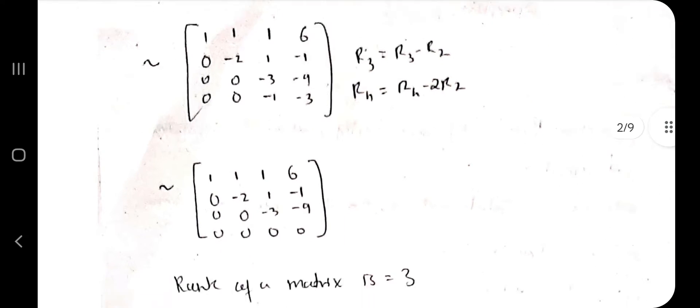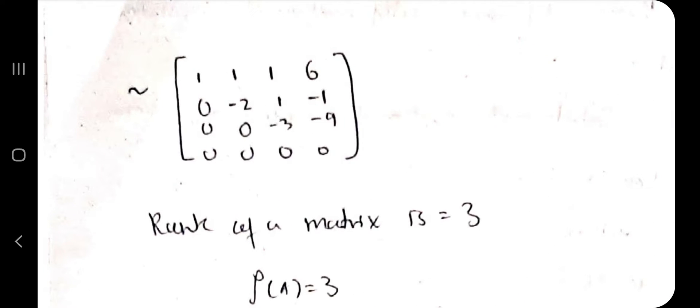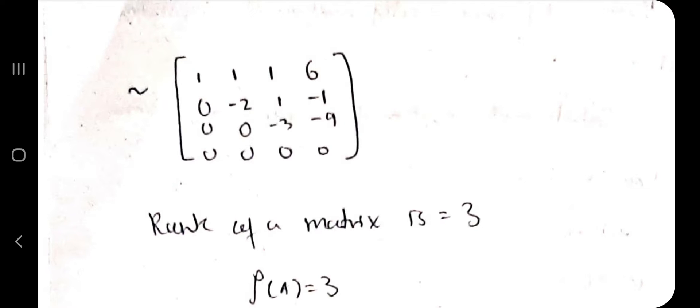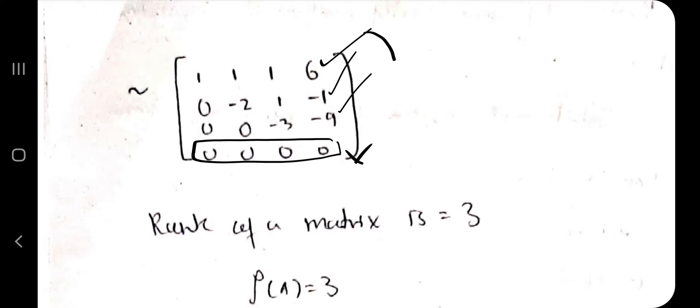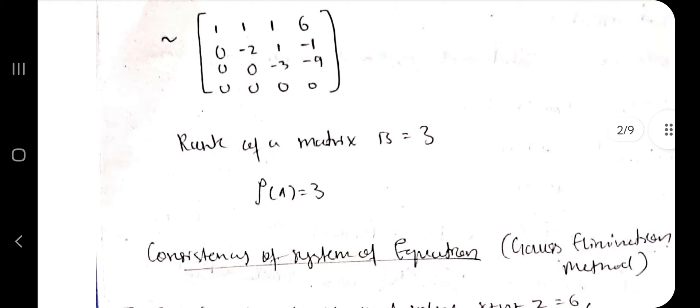After handling the first column, focus on the second column to get zeros below the next leading entry. For example, subtracting R2 from R3 gives zero there. Do the same for R4 and then proceed to the third column. Once echelon form is achieved, count the non-zero rows. A zero row means all elements are zero; any non-zero element makes it a non-zero row. The number of non-zero rows is the rank. In this case, the rank of the matrix is 3.